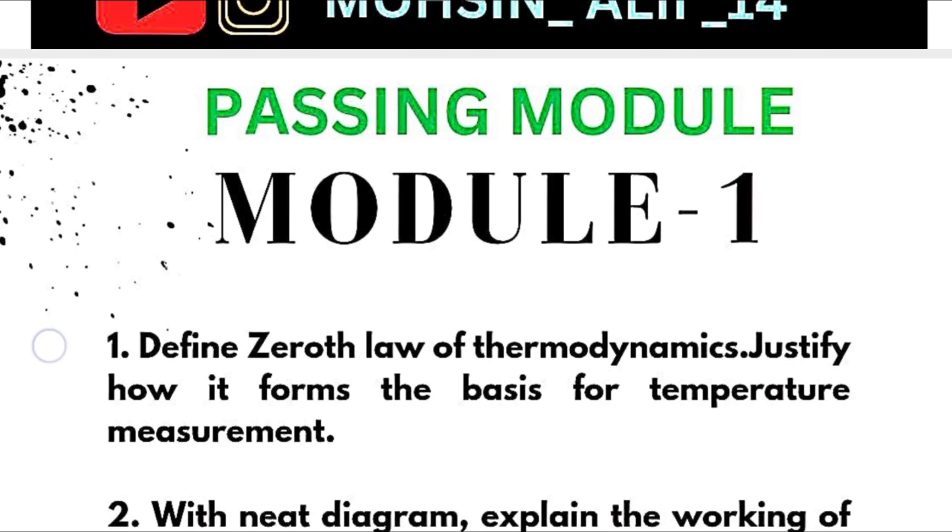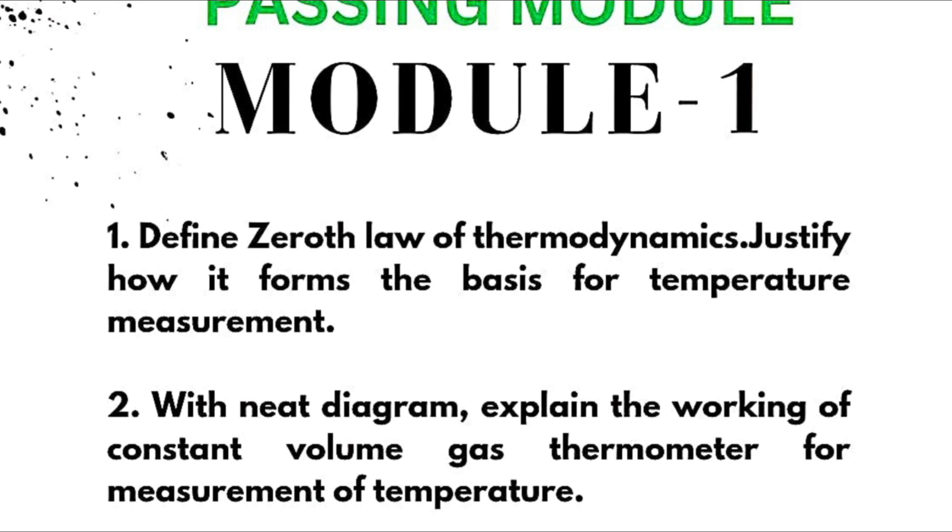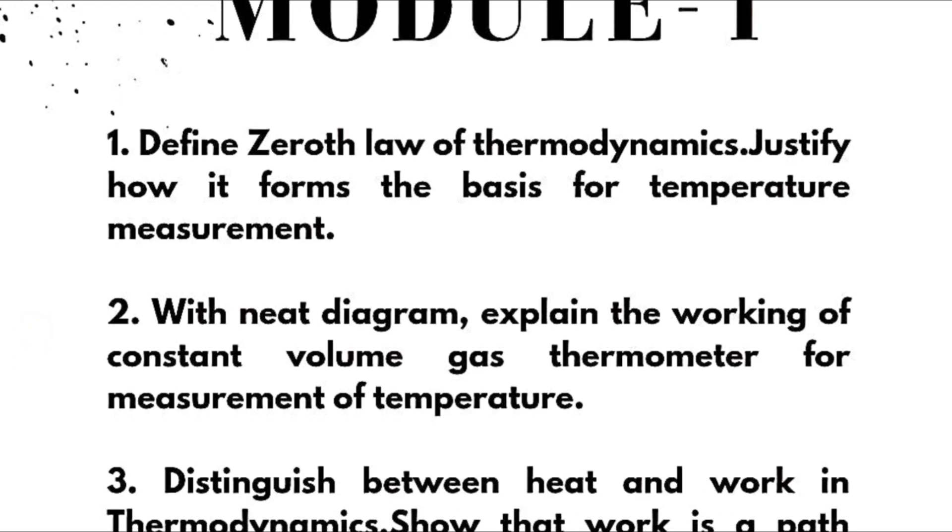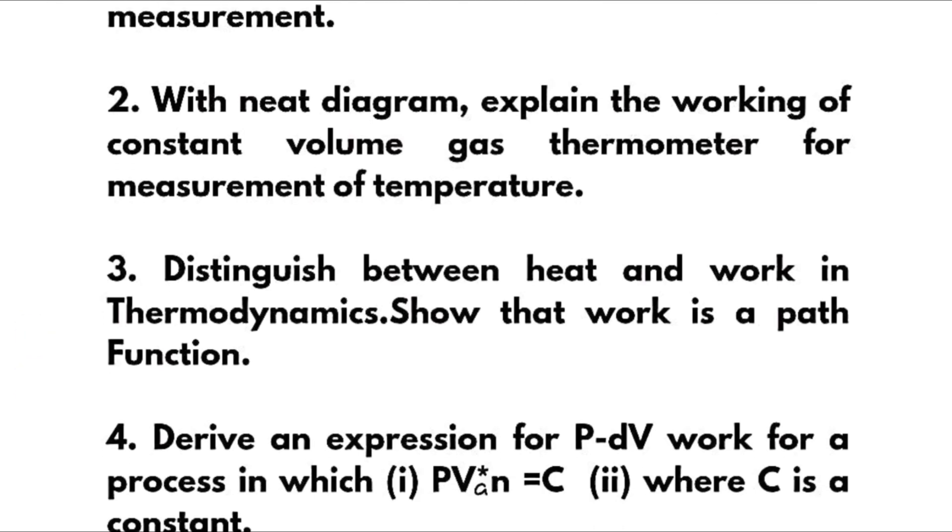First of all we have Module 1, which is a passing module, in which you have to definitely go through this particular question: define zeroth law of thermodynamics, justify how it forms the basis for temperature measurement, and with a neat diagram explain the working of constant volume gas thermometer for measurement of temperature. It is again a super important question. Distinguish between heat and work in thermodynamics and show that work is a path function.